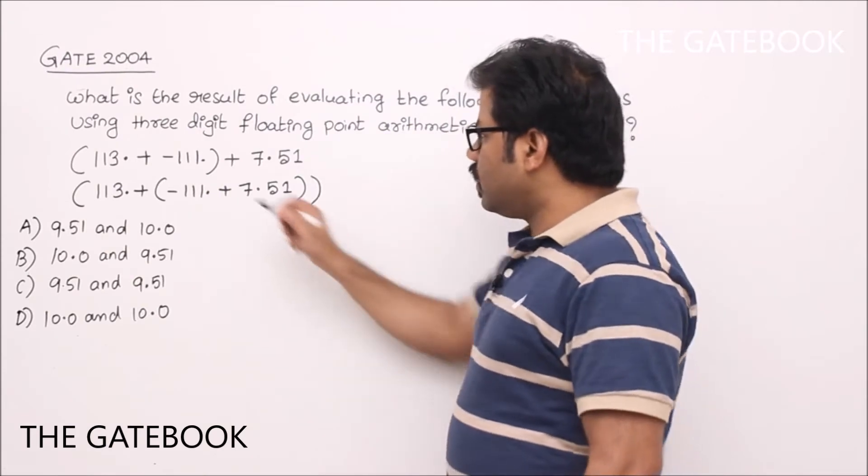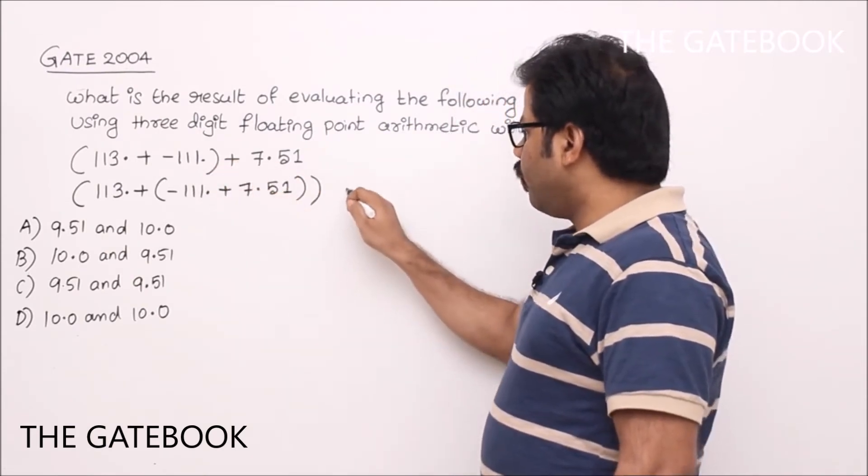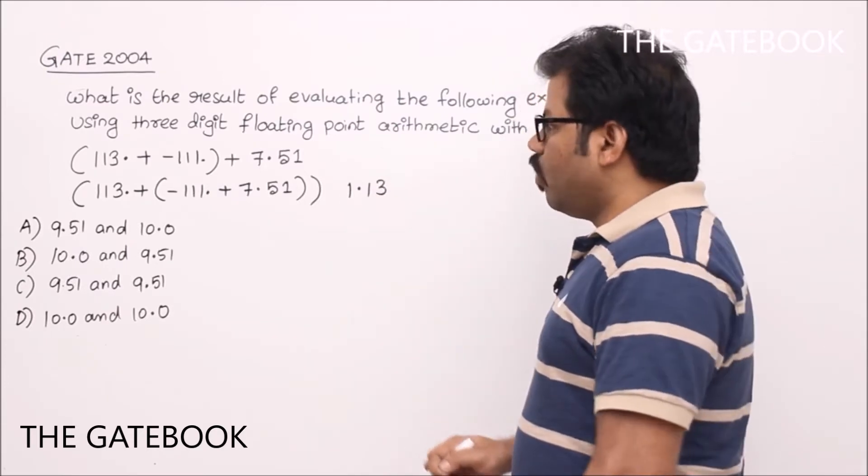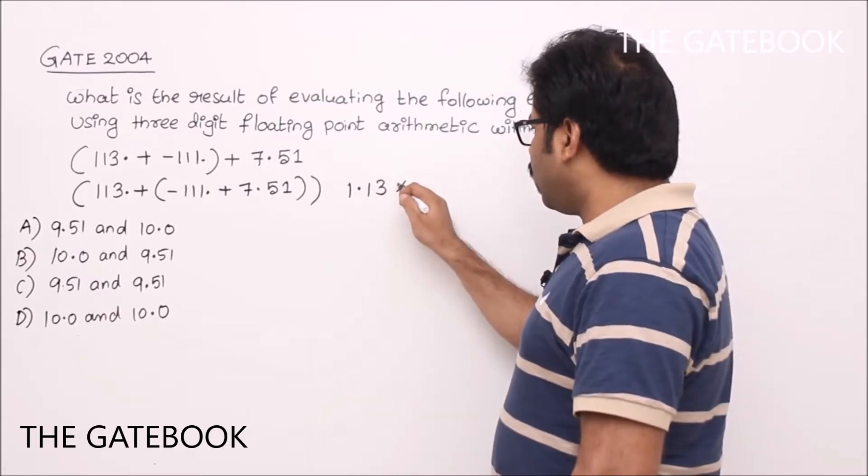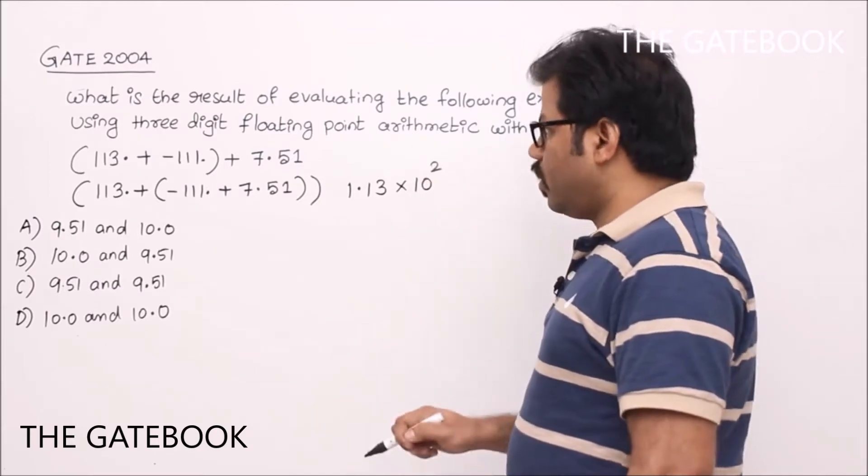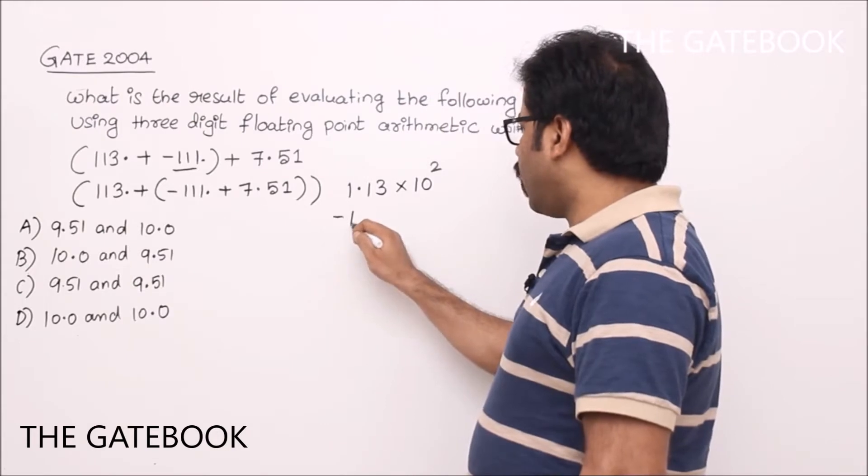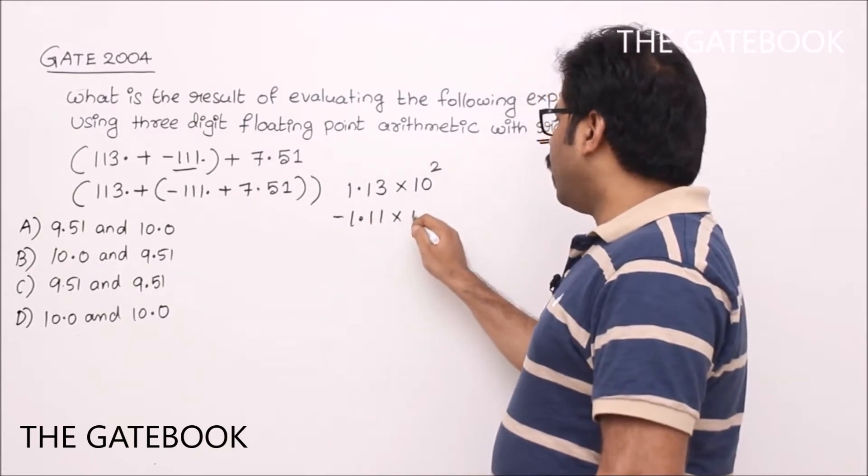So since it is a three digit floating point numbers, then we can write them like this. There will be three significant digits. 113 is nothing but 1.13 into 10 to the power of 2. Now minus 111 is nothing but minus 1.11 into 10 to the power of 2.